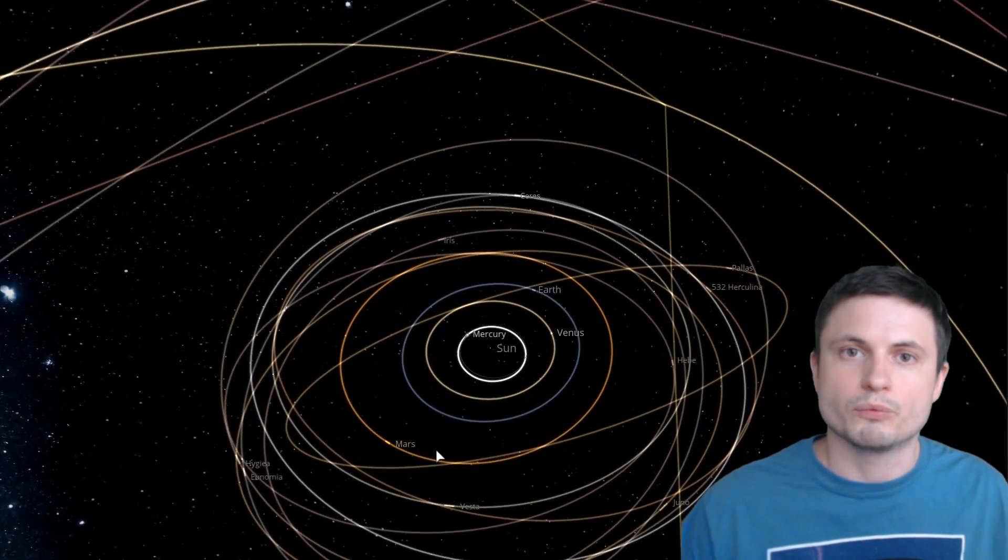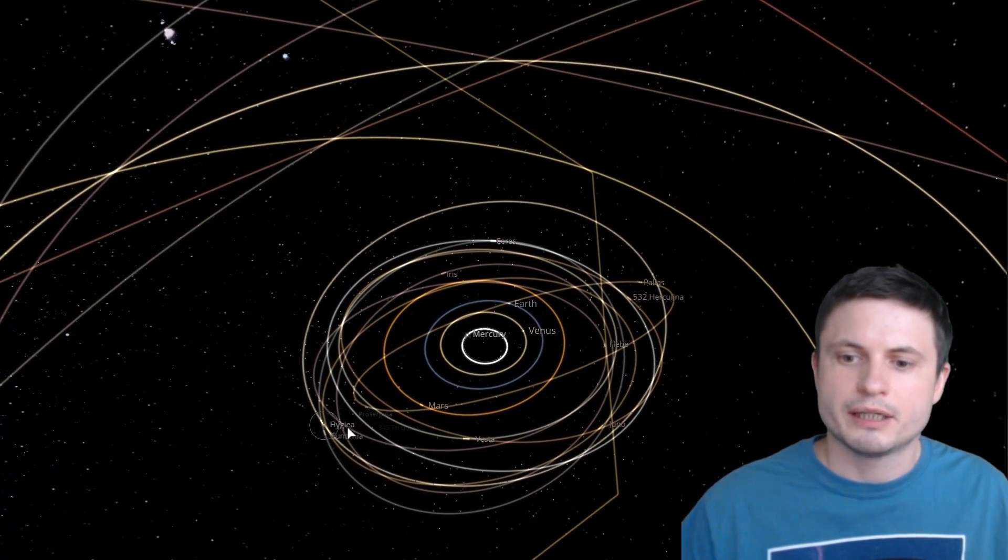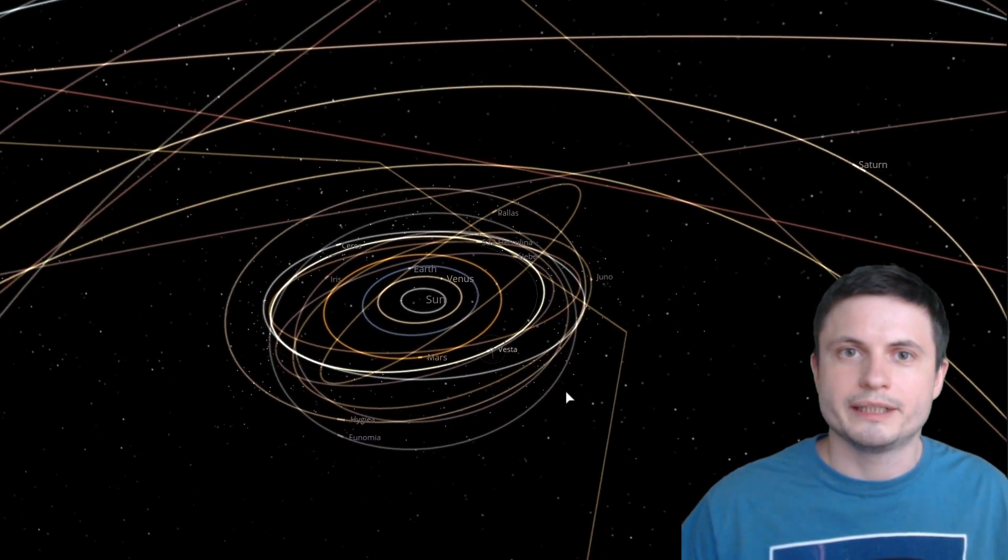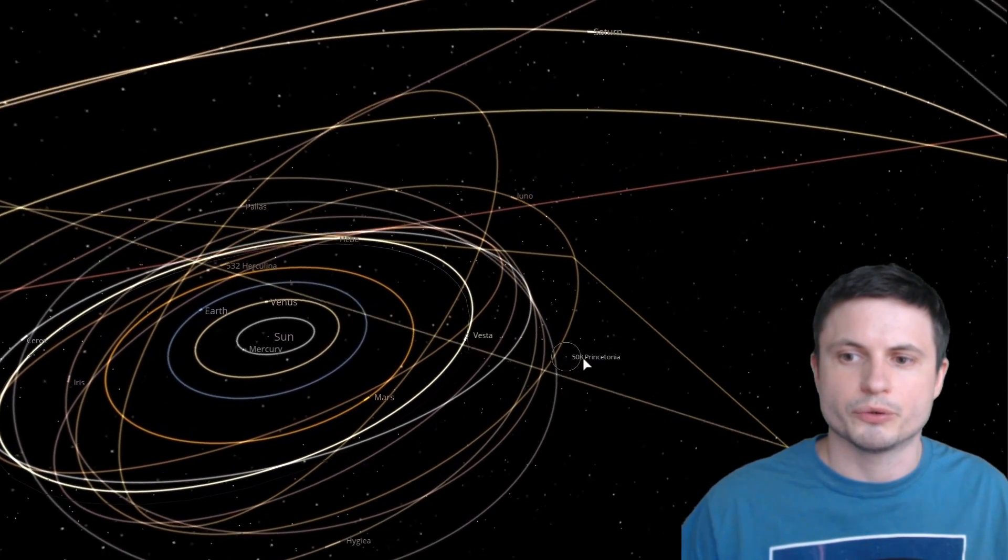And the objects with even higher eccentricity are usually asteroids or anything else located in the asteroid belt. Like for example Vesta, Ceres and so on.